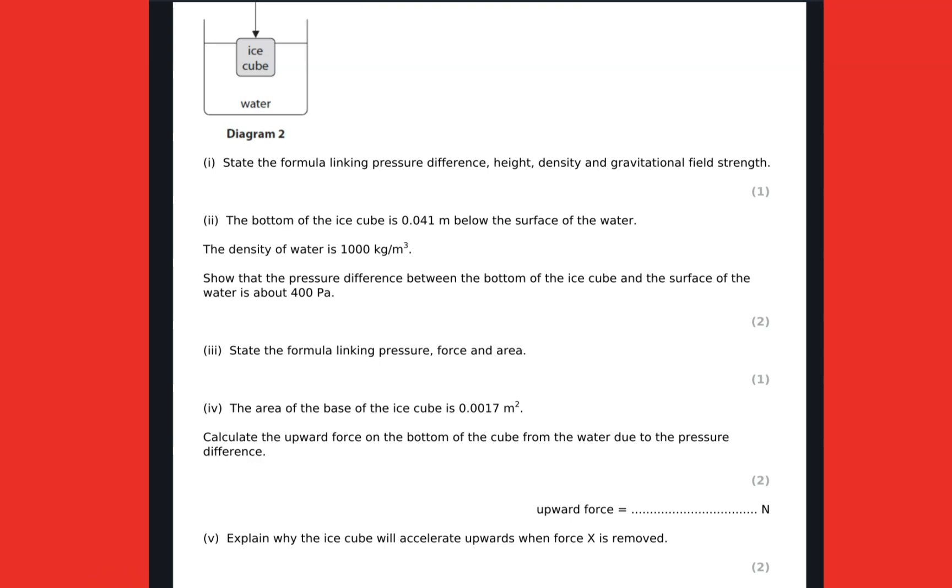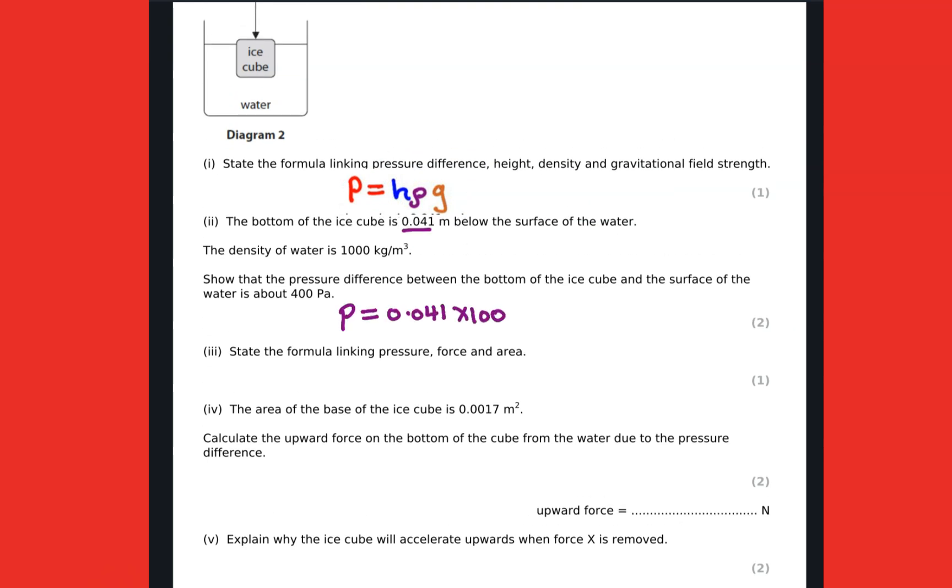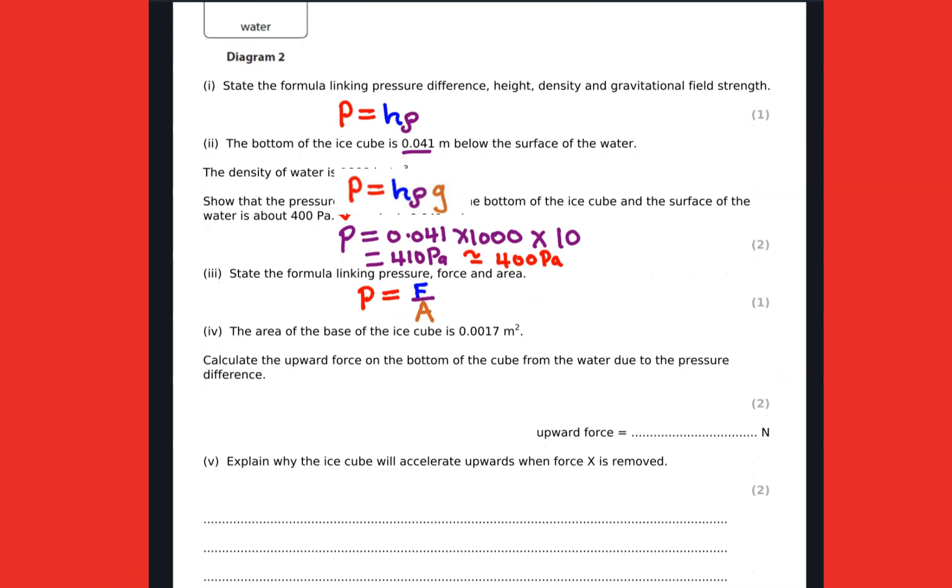Moving to the next part here, we are supposed to work out the pressure, and then our answer is going to be 410 pascals, which is approximately 400 pascals. The formula linking pressure, force and area, pressure in solids, is as given there.